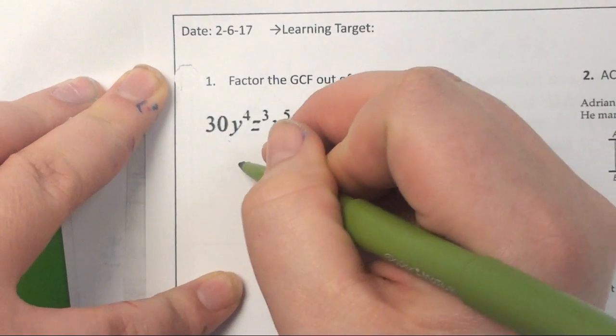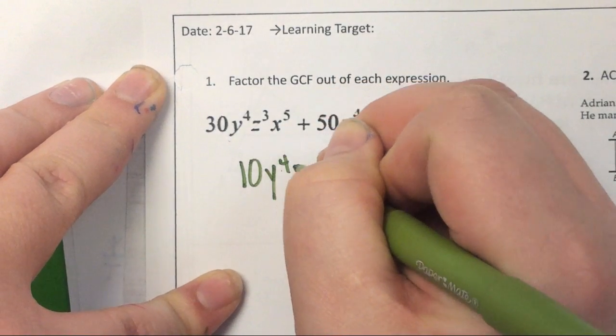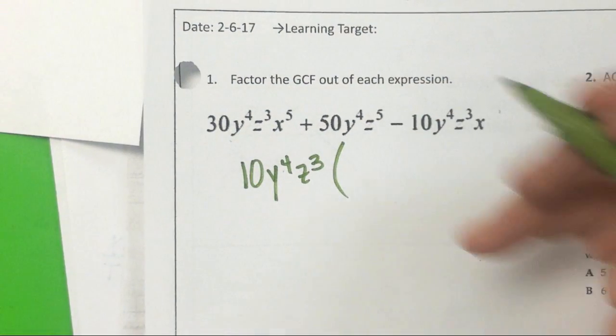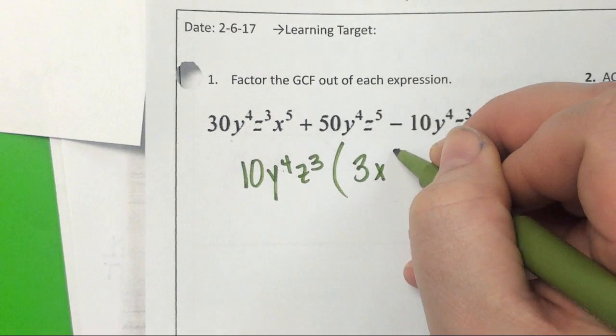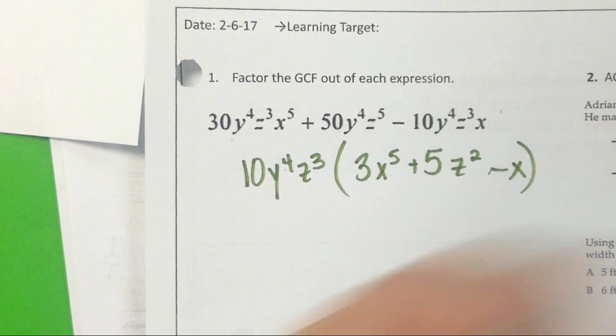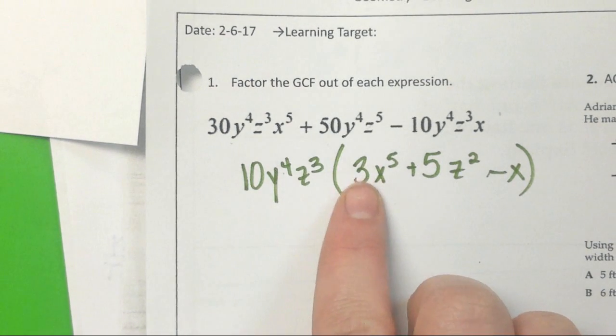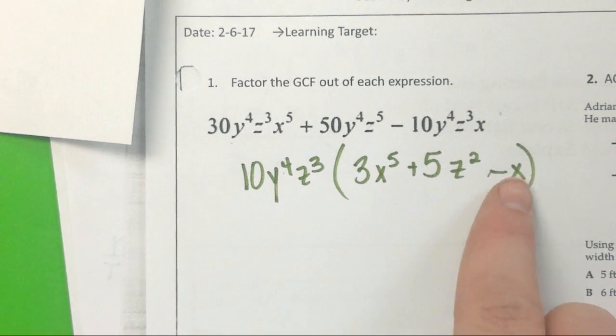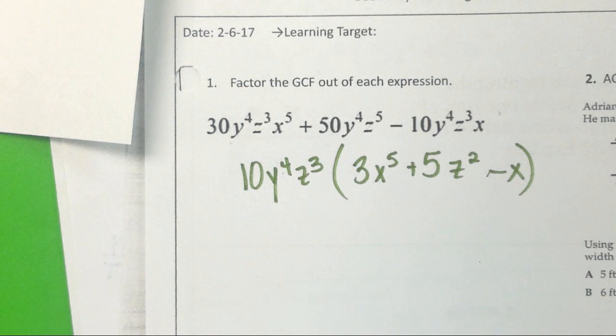10y to the fourth, z to the third. And what were you left with? 3x to the fifth, z squared minus x. Okay, so she took out a 10. 10 times 3 is 30, I know she's right on that one. 10 times 5 is 50, I know she's right on that one. 10 times negative 1 is negative 10.